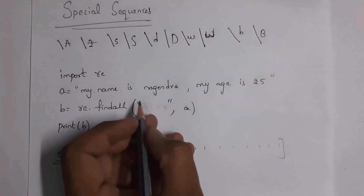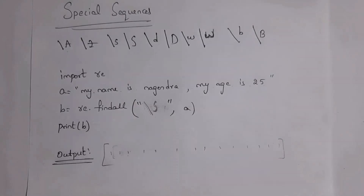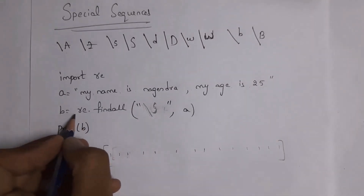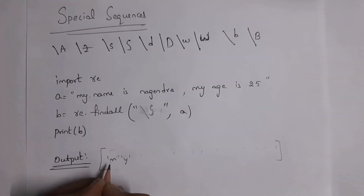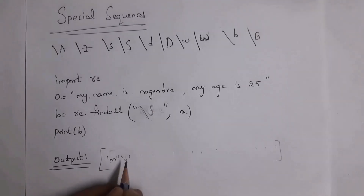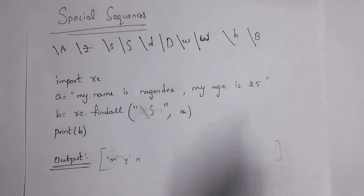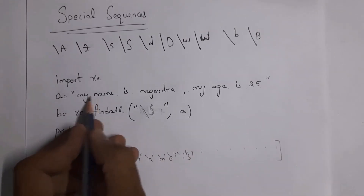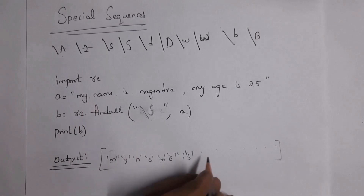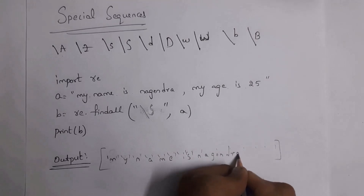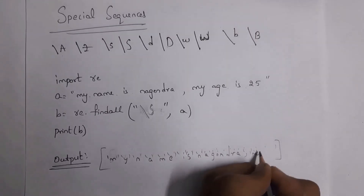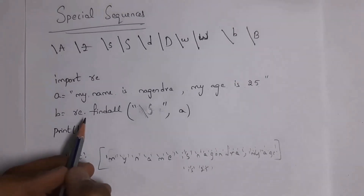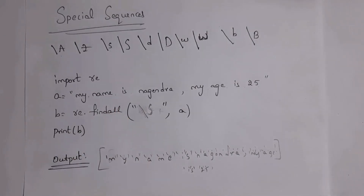Next I'll explain `\S` (backslash capital S), which is opposite to `\s`. While `\s` represents only spaces, `\S` represents all characters except spaces. When you write `re.findall('\S', a)`, it prints each character in single quotations — 'm', 'y', 'n', 'a', 'm', 'e', and so on — skipping spaces. It will print all characters from 'my name is nagendra, my age is 25' except spaces.